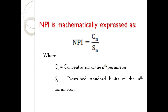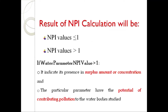After you calculate the NPI index value, the value obtained will either be less than or equal to one, or greater than one. If a water parameter's NPI value is greater than one, it indicates that the particular parameter is present in a surplus amount of concentration in the water samples, and that parameter has the potential of contributing pollution to the water quality being studied.